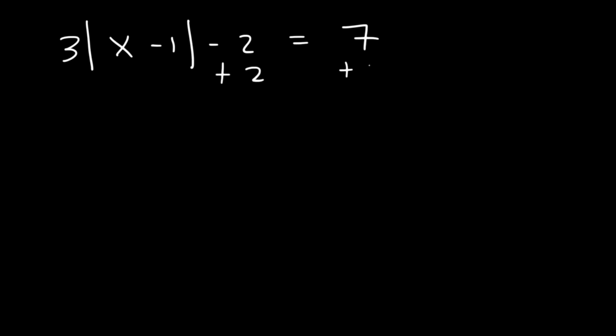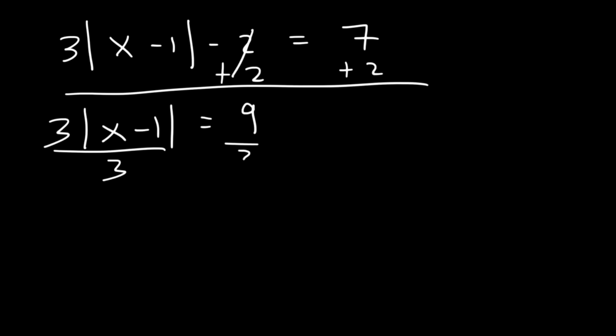So let's add 2 first. So we're going to get 9 on the right side. Next, let's divide by 3. Now you want the absolute value symbol by itself on one side. Once you have it at this point, now you want to write two equations.